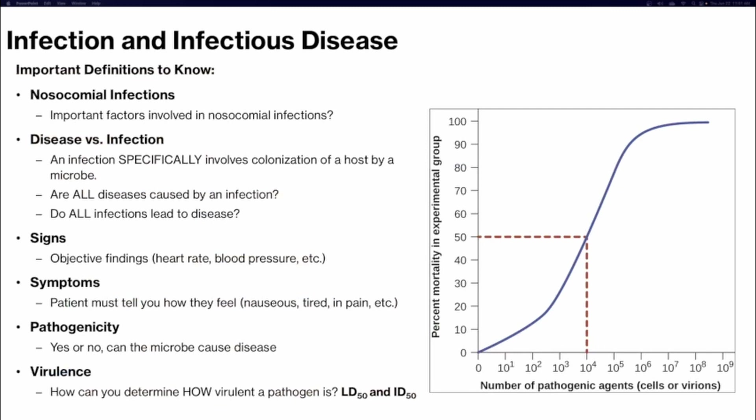Some important definitions regarding infection and infectious disease. Know about nosocomial infections — hospital-acquired infections — and the important factors involved. They happen because patients are most often immunocompromised, hospitals are heavily populated places with doctors, nurses, patients, and visitors, and there are constantly drugs and antimicrobials being used in hospitals, increasing the chance of having resistant strains present.